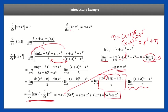The derivative of sine of x to the fifth is not cosine of x to the fifth, but it's cosine of x to the fifth times 5x to the fourth. Notice we take the derivative like normal — cosine of x with the fifth still there — and then we take the derivative of the inside, giving us 5x to the fourth. That's how you use the chain rule.